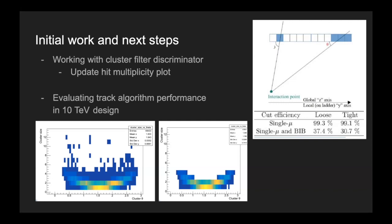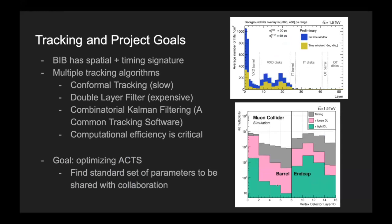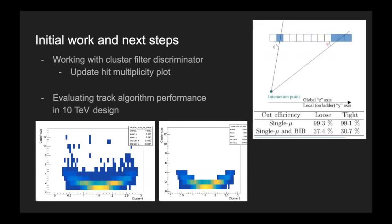So what I'm working on right now is using this cut to update the plot in the previous slide, the one with the green and the pink, to instead of using the double layer filter, to instead use the cluster size filter. And then another thing that I'll be working on next is moving the tracking algorithm performance to a 10-TEV collider design. So the collaboration for the muon collider has considered multiple designs for different physics goals. But the tracking algorithms and their performance tracking is still running on the 1.5-TEV design. So next, what I'm going to be doing is moving these tracking algorithms to the updated design. And then afterwards, I will move forward on the optimization of the tracking parameters. Okay, that is my presentation. Thank you.